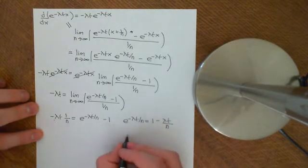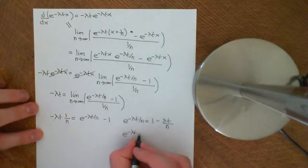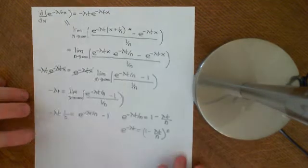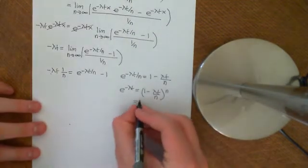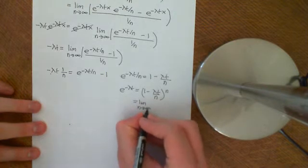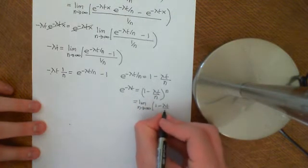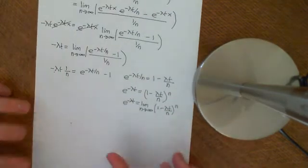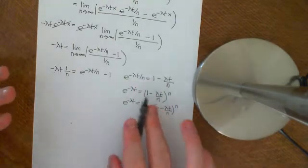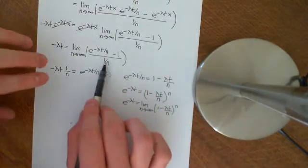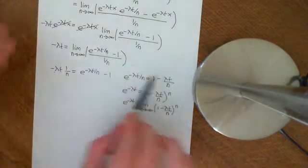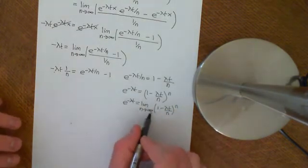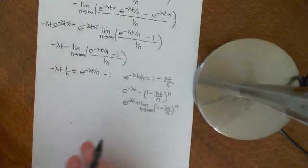Then we raise both sides to the power of n to get e to the negative lambda t is equal to 1 minus lambda t over n to the power of n. And now we just remember that n was approaching infinity. So we can write that the limit as n approaches infinity of 1 minus lambda t over n to the power of n is equal to e to the negative lambda t. Excuse the sloppy applied maths here, but it's good intuition — a nice intuitive argument for why that limit equals e to the negative lambda t.